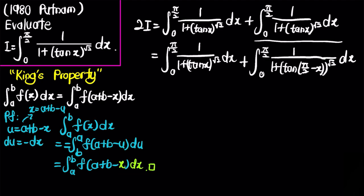Observing the second integral, we use the well-known identity that tangent of (π/2 − x) equals 1 over tangent x, which is also cotangent x.